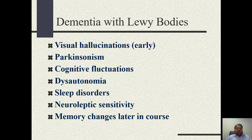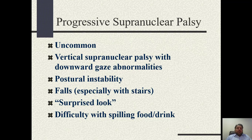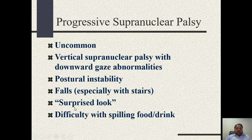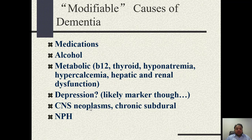Progressive supranuclear palsy is a type of Parkinson-plus syndrome characterized by a supranuclear type of palsy in the downward gaze of the eyes. Patients also have posterior instability, causing repeated falls, and patients have a surprised or steady look due to facial dystonia. These are the characteristics of progressive supranuclear palsy.